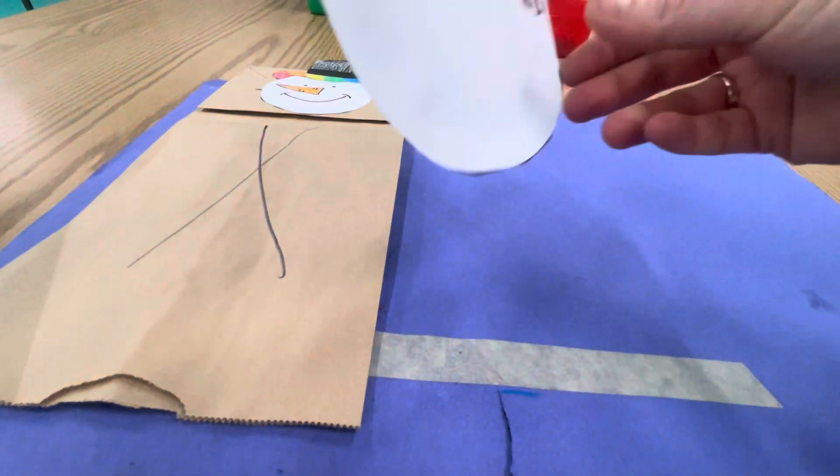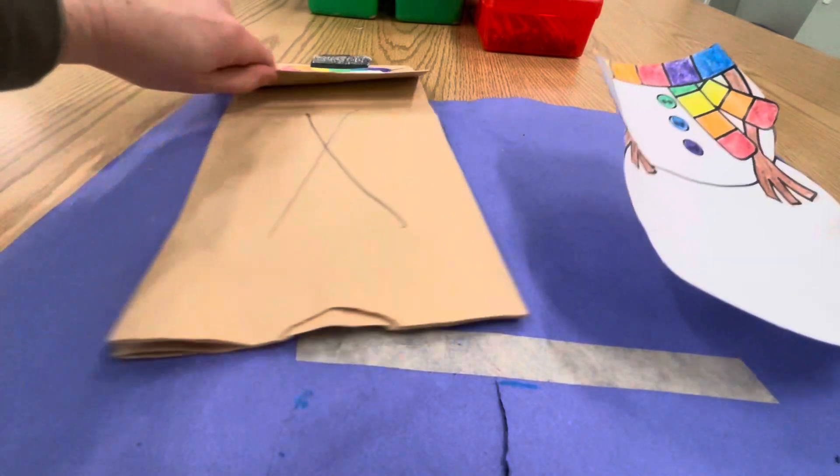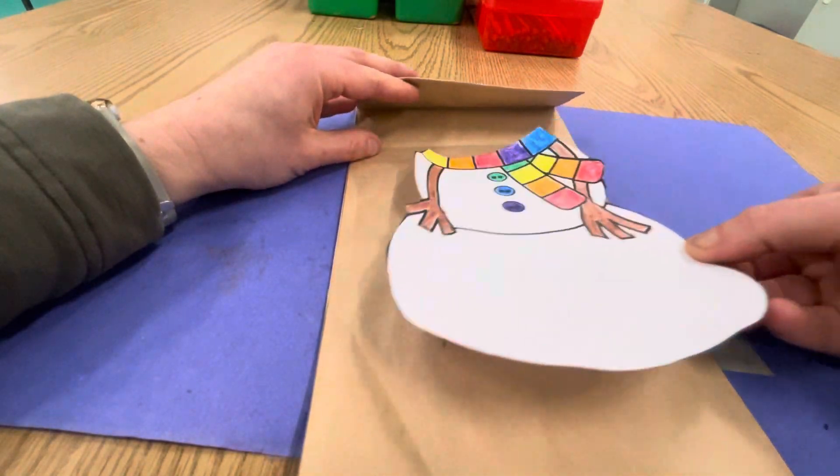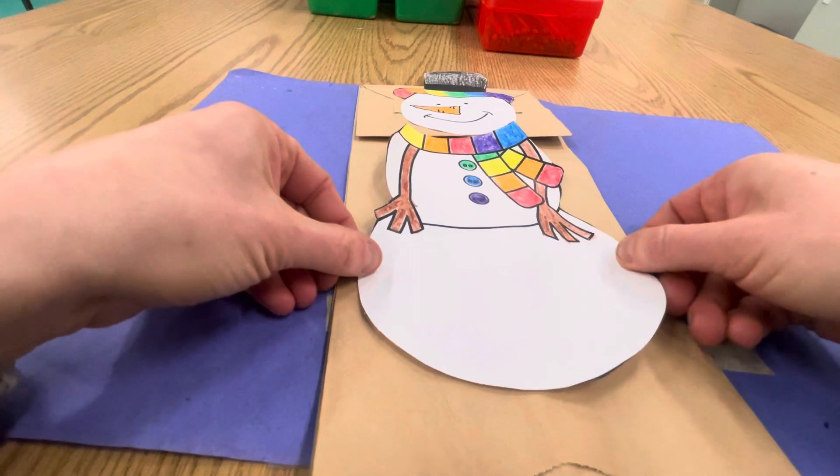And then when you put the snowman body down, remember not to glue over that flap. So I'm going to open it up just a little bit and make sure that I cover up the X.